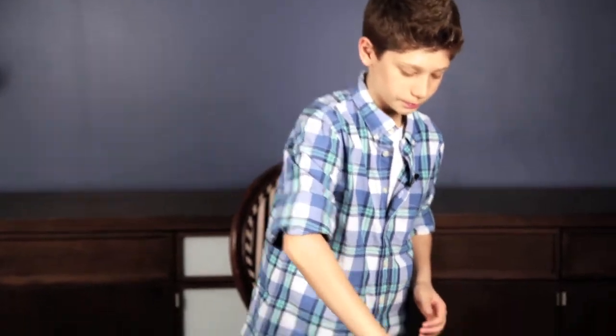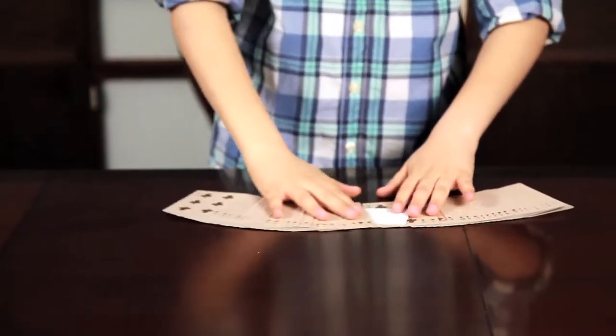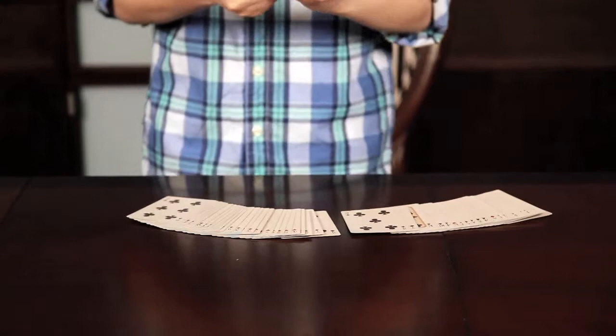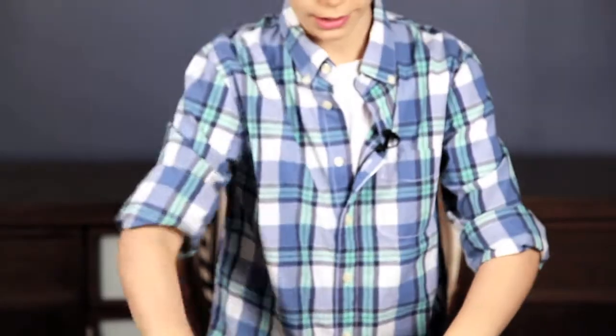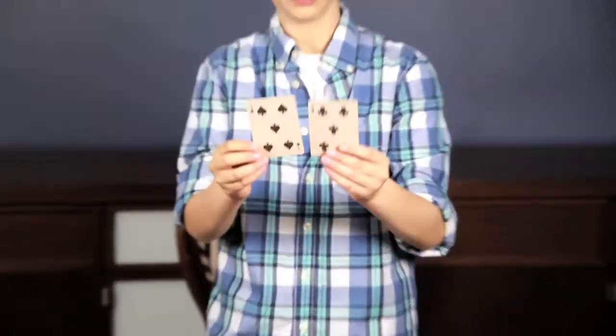You spread out the cards and take the piece of paper in between. You can see that I wrote down the five of clubs and the five of spades. That's the two cards between the prediction.